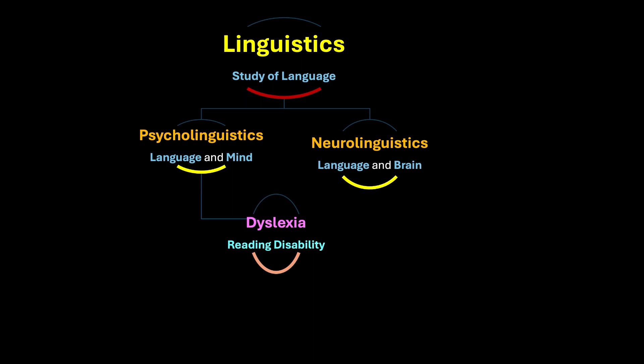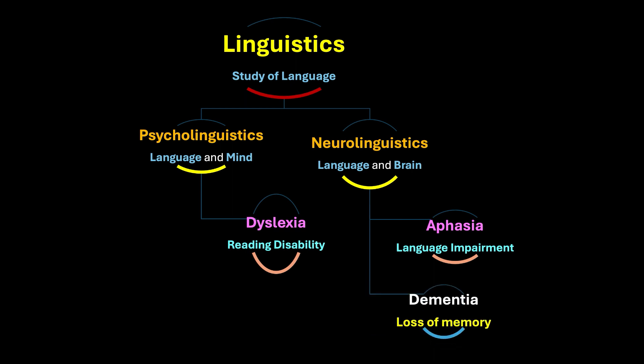Neurolinguistics has sub-branches. The first is aphasia, which means language impairment or language disorder. Another sub-branch is dementia, which refers to loss of memory.